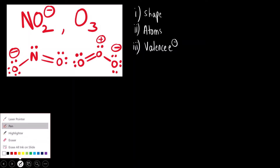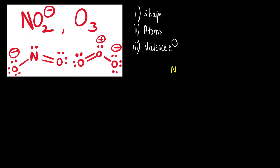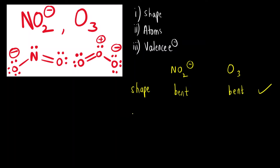Now let us see one by one: NO₂⁻ and O₃. First let us start with shape. The shape of NO₂⁻ is bent or angular, and O₃ ozone is also bent. So the shape is same. Total number of atoms: NO₂⁻ has one nitrogen plus two oxygen — three atoms. Ozone also has three atoms.